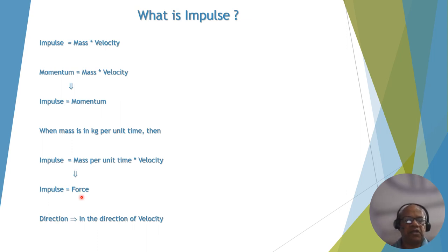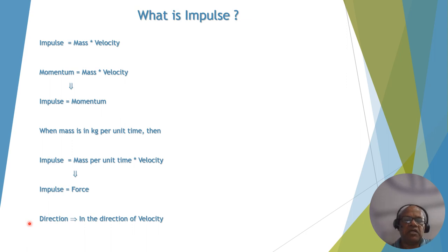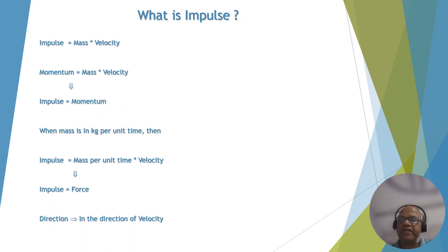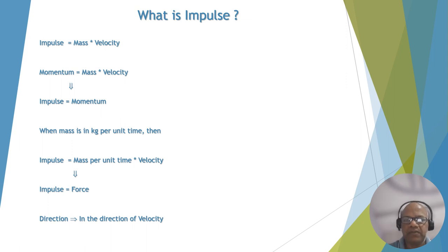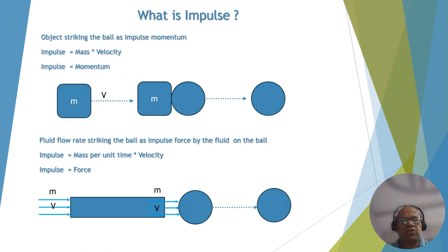The direction of impulse is the same as the direction of velocity at which the object is moving. So the direction of impulse will always be in the same direction as the velocity of the object.